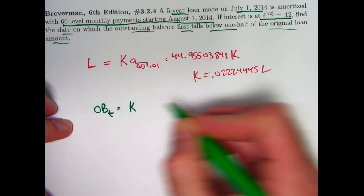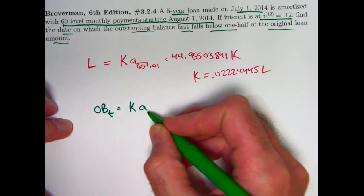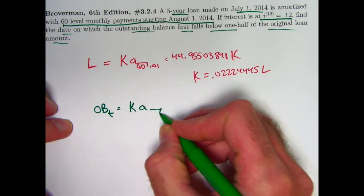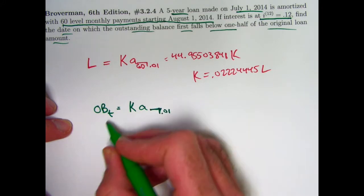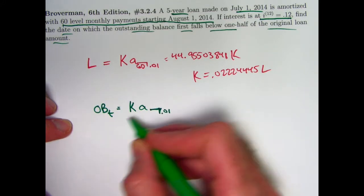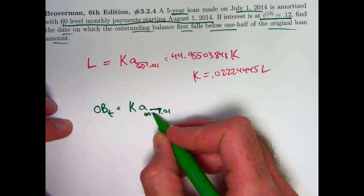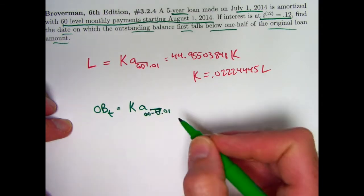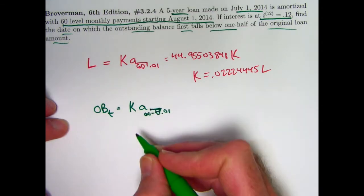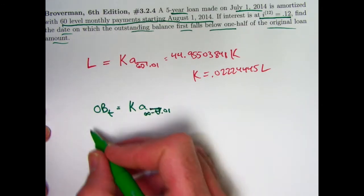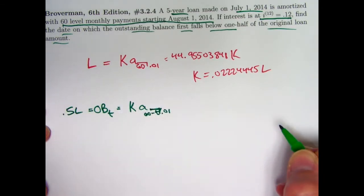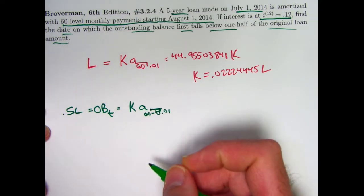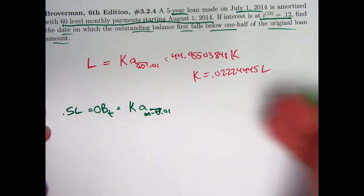The payments are K. You have to multiply that by A with 1%. How many remaining payments are there? If there are T payments that have occurred so far, then 60 minus T is the number of payments that remain. And we want to find the value of T when this first is just less than 0.5L. What value of T will make this just less than 0.5L for the first time?